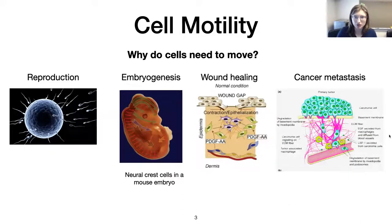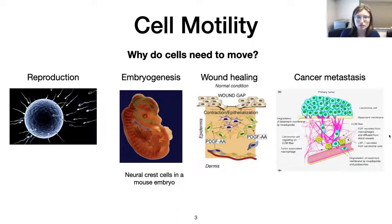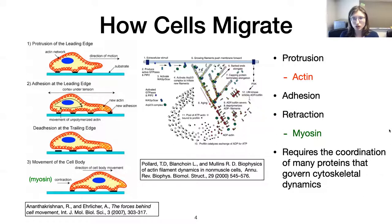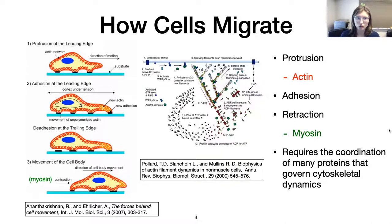Cells need to move for a variety of different reasons: sperm cell reproduction during embryogenesis, wound healing, and for some not-so-great reasons like cancer metastasis. It's a critical function for life. The traditional paradigm is that a cell on a glass coverslip uses actin polymerization at the leading edge to generate leading-edge protrusion, adhesion to the substrate, and then myosin-driven rear contraction — a cycle of protrusion, adhesion, and retraction. This highly conserved structure during protrusion was illustrated by Tom Pollard.